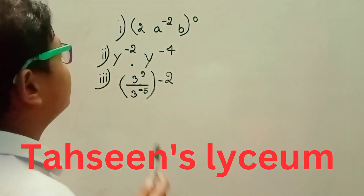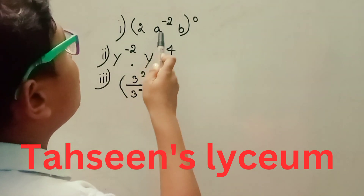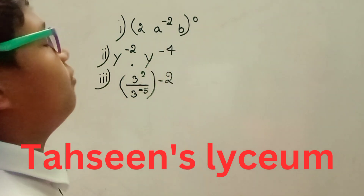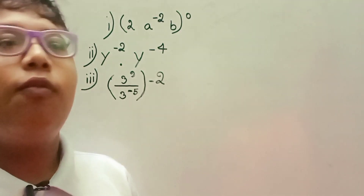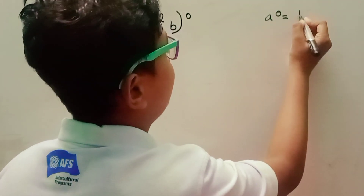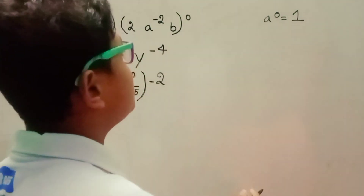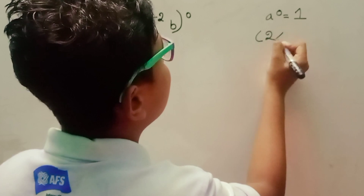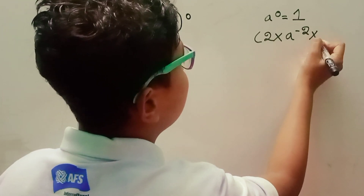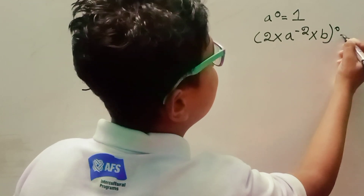Look at the problems. Number one: two into a to the power minus two, into b, then whole to the power zero. We know a to the power zero equals one, so the value of this expression is equal to one.